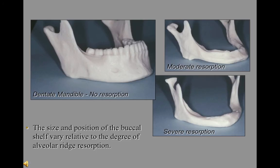The size and position of the buccal shelf vary relative to the degree of alveolar resorption. Note that the buccal shelf determines the extent of the buccal flange, and the more resorption that takes place, the more it compromises the stability of the denture.